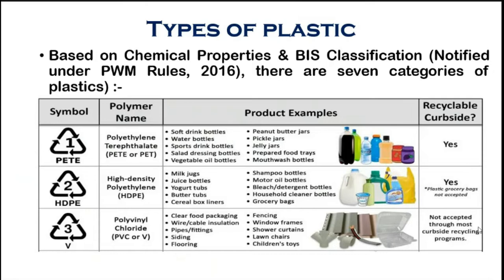PETE-1 is used in soft drink bottles, water bottles, sports drink bottles, jelly jars, and mouthwash bottles — the bottles commonly used in day-to-day household items. The second category is high-density polyethylene (HDPE), used in milk jugs, juice bottles, and yogurt tubes, such as grocery containers. This is also recyclable.